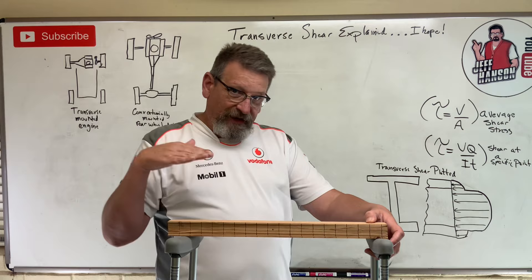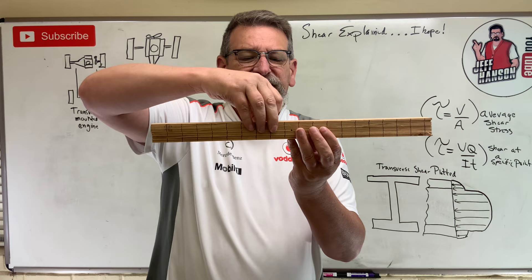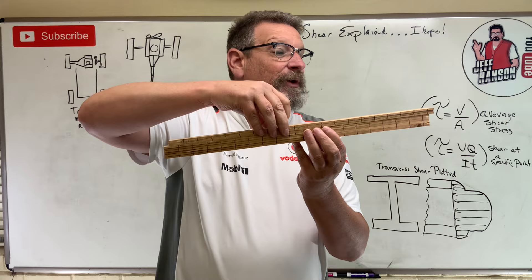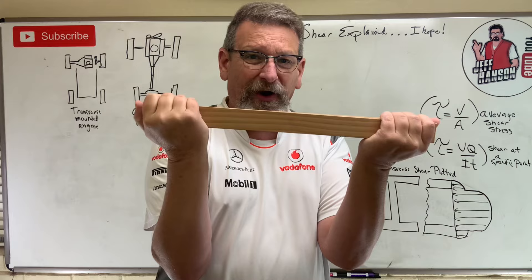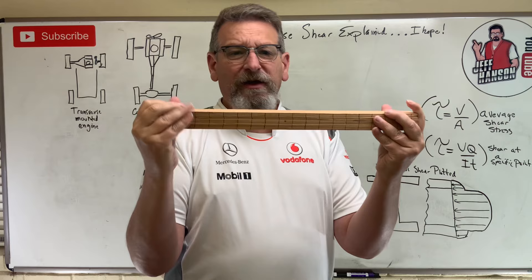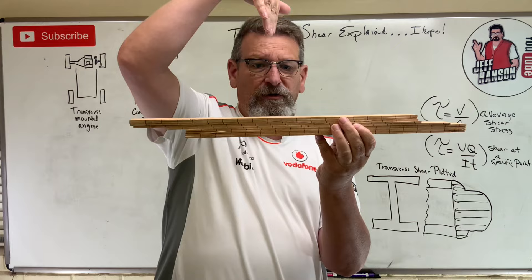Transverse shear is shearing this way on the beam — not the direction we typically think of. As I bend the beam, these layers are sliding across each other one relative to the next. Even in an unsawed beam, those fibers of the wood are trying to slide across each other in the transverse direction. That's the transverse direction, not what we typically think of.